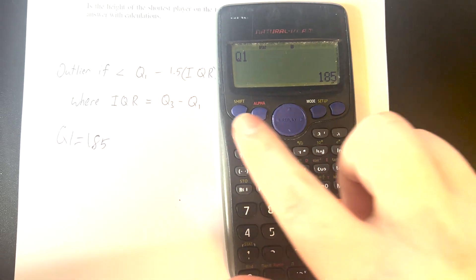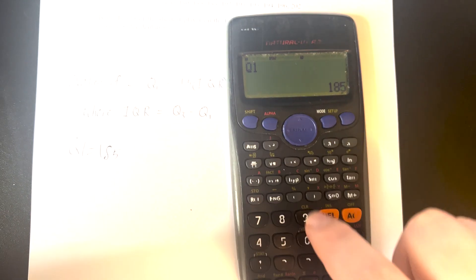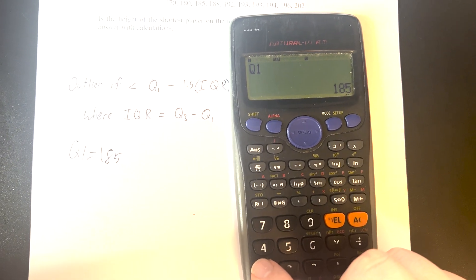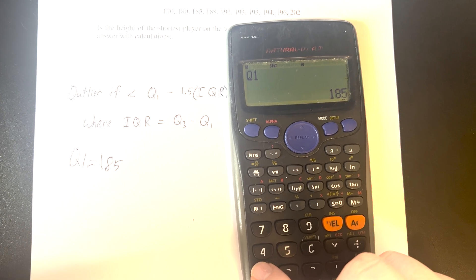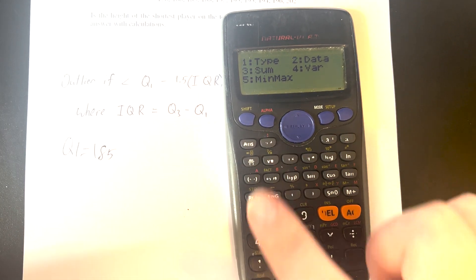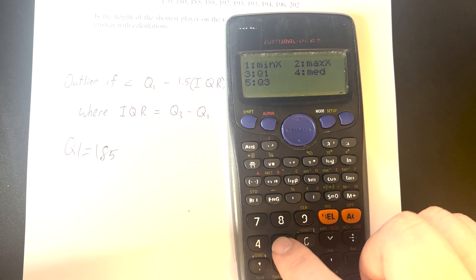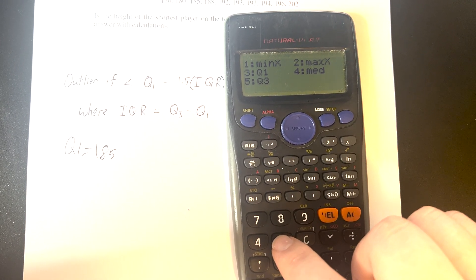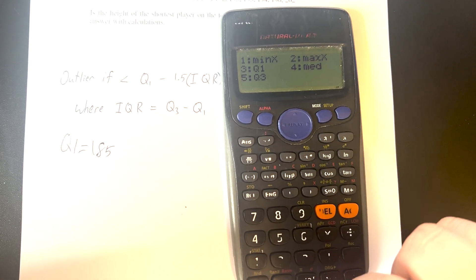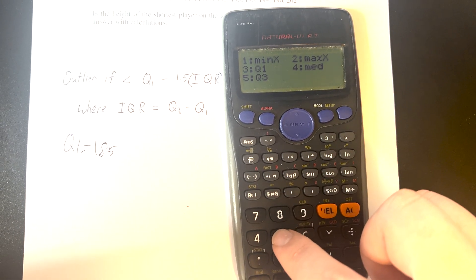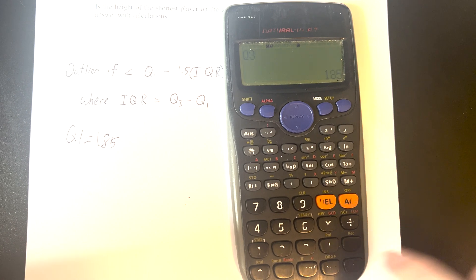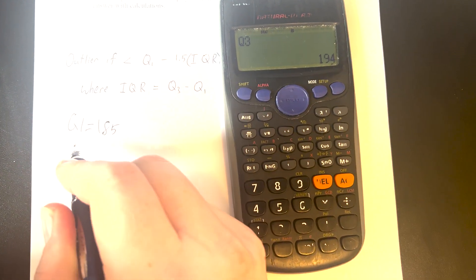Now let's figure out what Q3 was, because that's all that's left for us to determine if this dataset will have an outlier. Again, shift 1, min max, and now we're looking for Q3, so we'll press option 5. As a quick note, you can also find your median by pressing 4. At Q3, we get a value of 194.